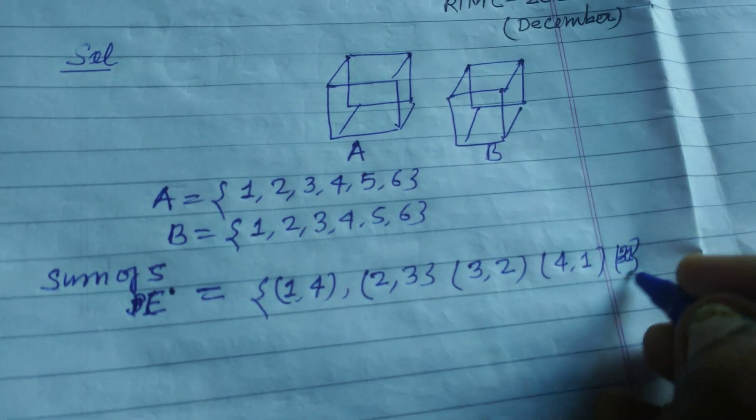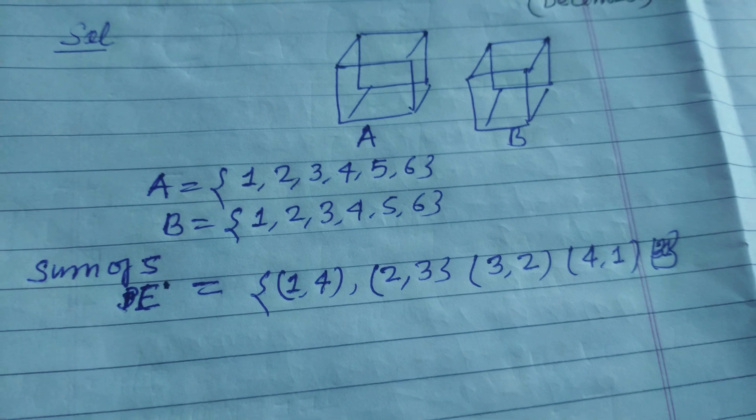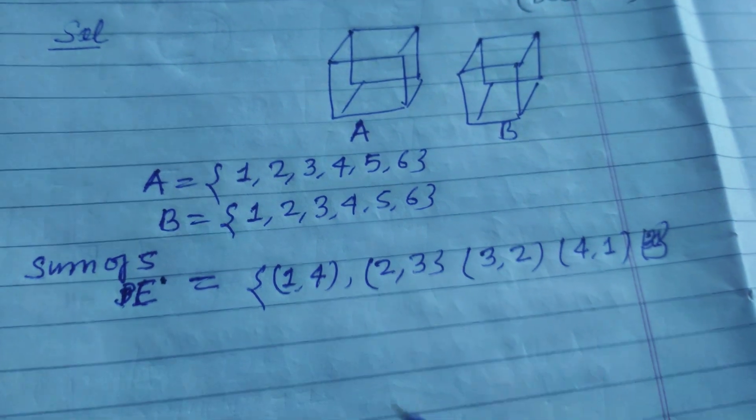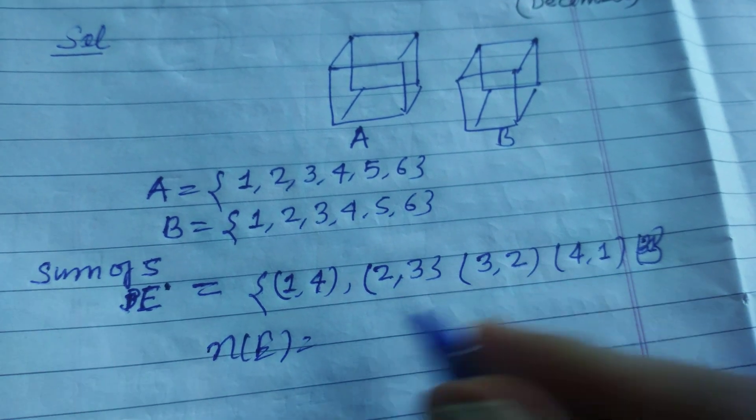And so these are the elements of the set getting a sum of five. So the number of elements in this set are 1, 2, 3, and 4.